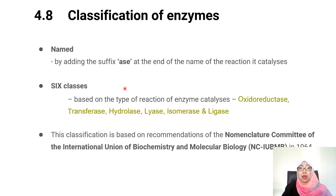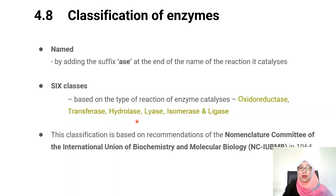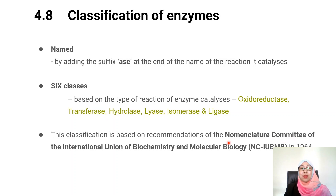We have so many enzymes — how do we classify them? They are grouped into six classes based on the type of reaction the enzyme catalyzes: oxidoreductase, transferase, hydrolase, lyase, isomerase, and ligase. This classification is based on recommendations of the Nomenclature Committee of the International Union of Biochemistry and Molecular Biology.